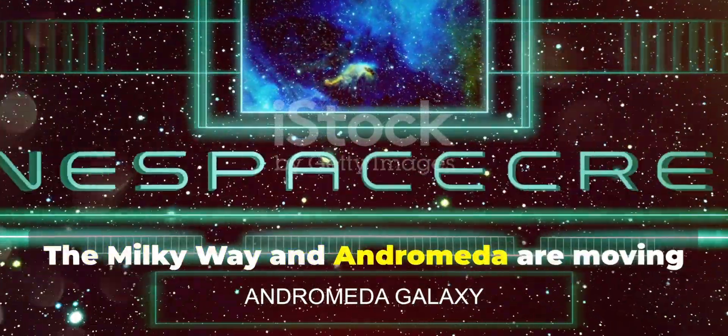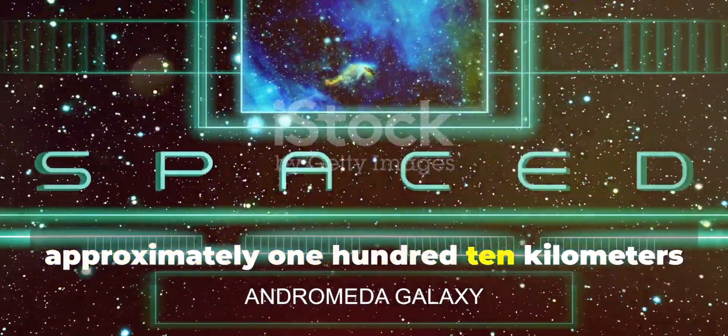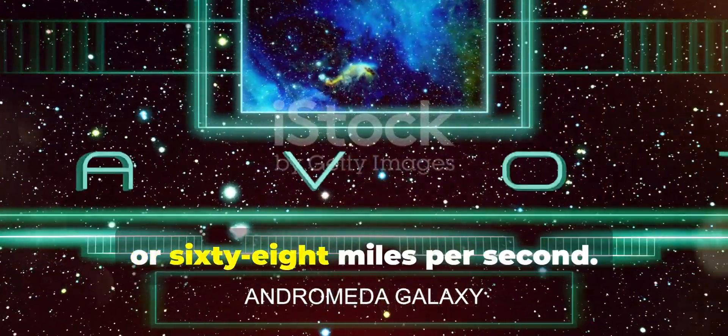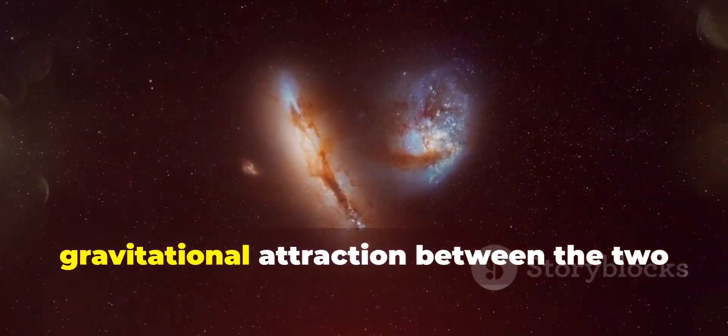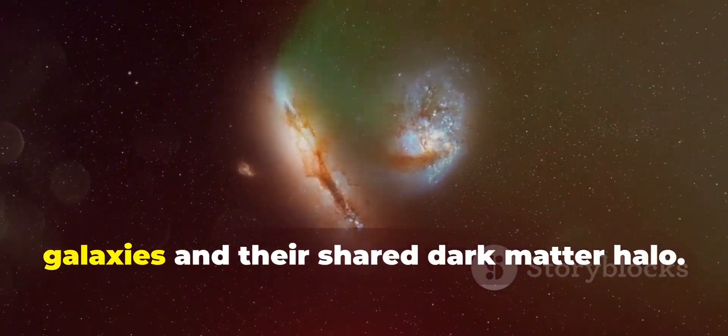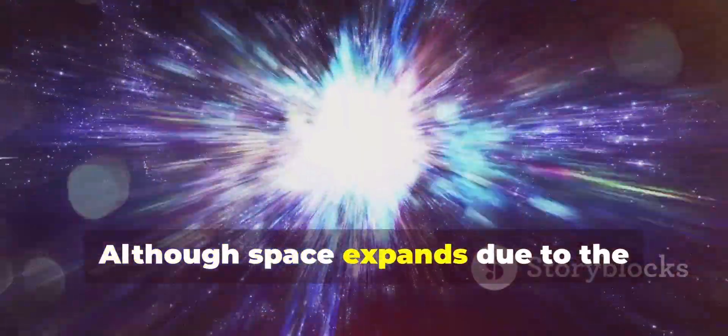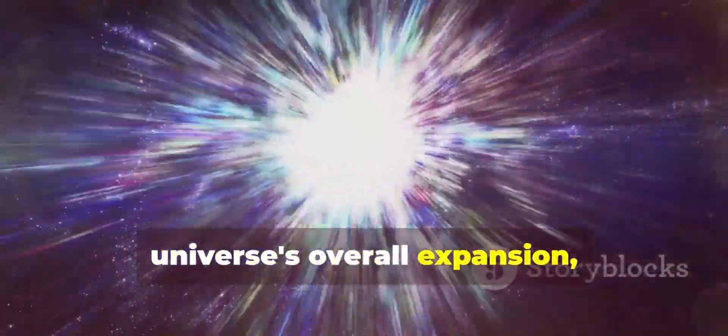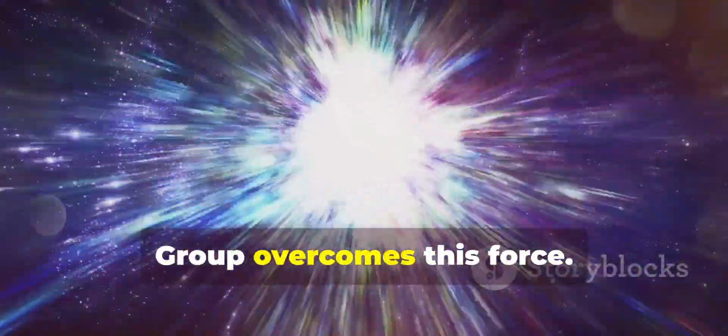The Milky Way and Andromeda are moving toward each other at a speed of approximately 110 kilometers per second, or 68 miles per second. This motion is driven by the gravitational attraction between the two galaxies and their shared dark matter halo. Although space expands due to the universe's overall expansion, the gravitational pull within the local group overcomes this force.